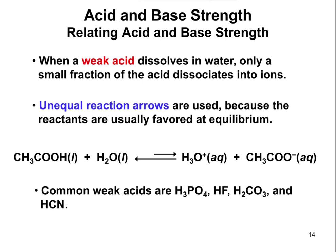A weak acid, on the other hand — an example here is acetic acid, CH3COOH. Whenever you put a weak acid in water, only a small fraction dissociates into ions. You have CH3COOH in water, and only a small amount comes over to form the products, as shown by the unequal reaction arrow. The reactants are what's favored. If you imagine 100 CH3COOH molecules mixed in water, you might get two that form the ion and 98 that stay as reactants. So you only get partial dissociation, as opposed to a strong acid where it's 100%.